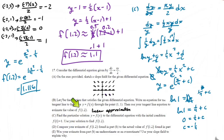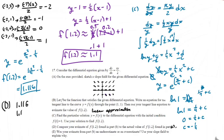Compare your estimate of F(1.2) from Part B to the actual value of F(1.2) found in Part C. We go 1.116 minus 1.1, and that difference is 0.016. Which number is bigger? The actual one — 1.116 — is bigger. Was your estimate from Part B an underestimate or an overestimate? It was an underestimate. That number is smaller than that one, so it was an underestimate.